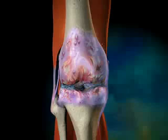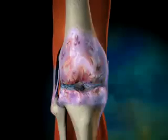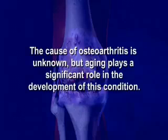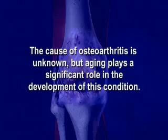Osteoarthritis can affect any joint in the body and is commonly found in the neck, back and hips. The cause of osteoarthritis is unknown, but aging plays a significant role in the development of this condition.